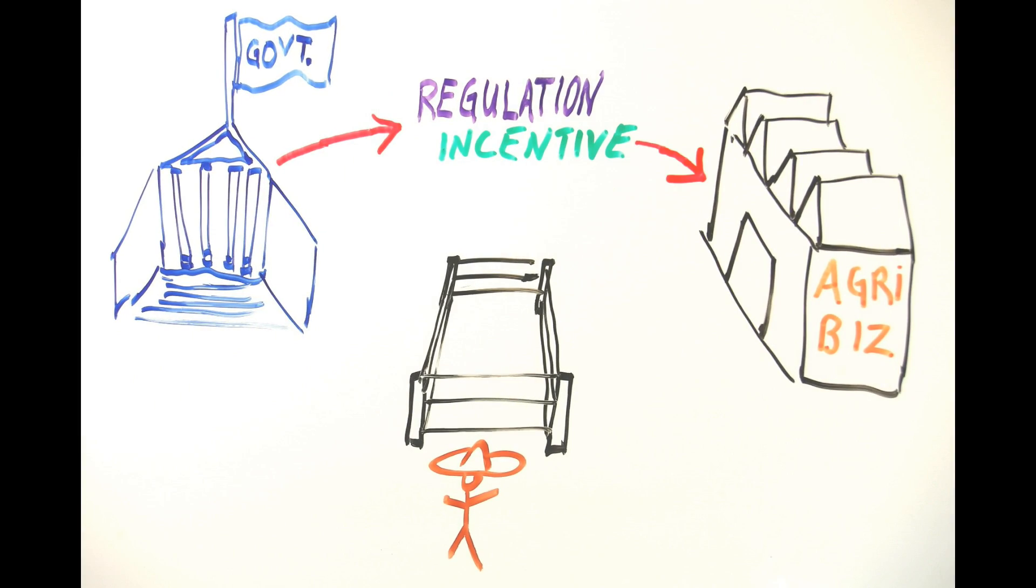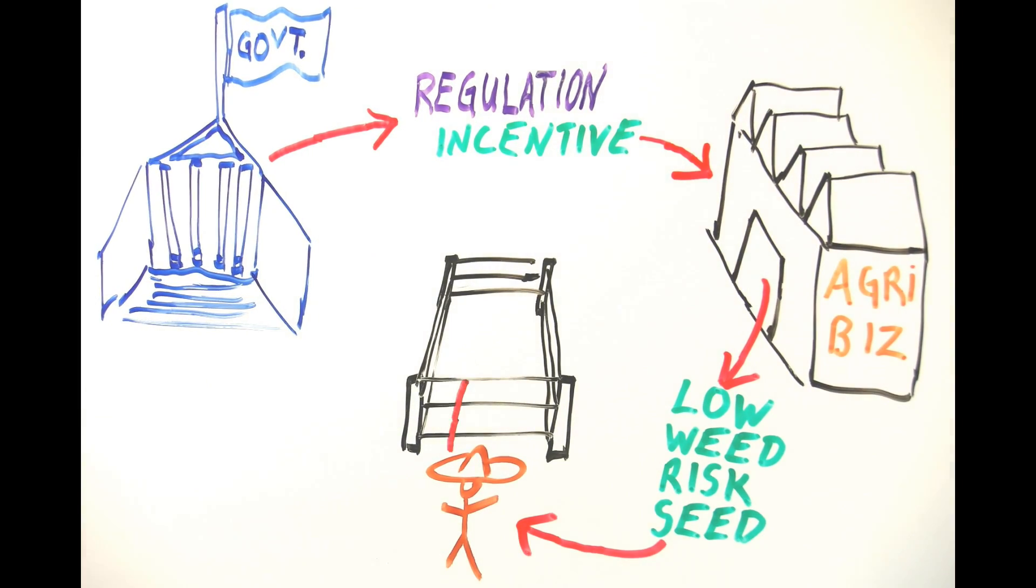Recent history tells us that new pasture plants can destroy ecosystems and managers' budgets. To avoid making the weed problem worse, we need to change the way pastures are regulated, developed, and used.